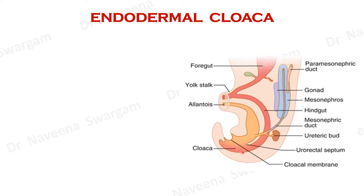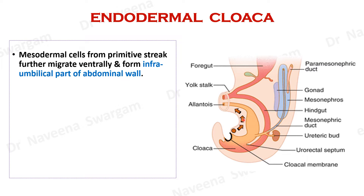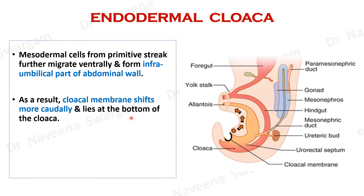Here is the endodermal cloaca. Here is the cloacal membrane and here is the genital tubercle on the ventral aspect of the tail end of the embryo. The mesodermal cells from the primitive streak continue to migrate around the tail end of the embryo, more ventrally and cephalic to the genital tubercle, towards the umbilical cord to form the infra-umbilical part of the abdominal wall. As a result, the length of the anterior abdominal wall increases so that the cloacal membrane shifts from the ventral to the caudal aspect of the cloaca, where it lies at the bottom of the cloaca.